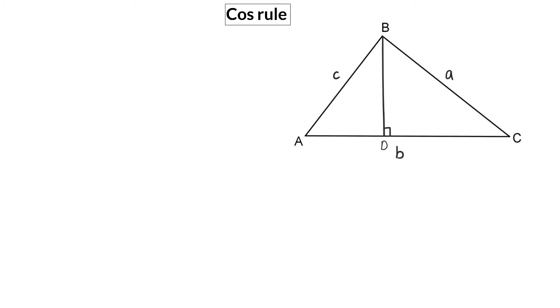For the proof of the cos rule, we are going to start with the same step of drawing a line perpendicular to side AC, and then working in the two 90-degree triangles. This time, we are also going to take side AC, which is small b, and break it up into a part X and B minus X.